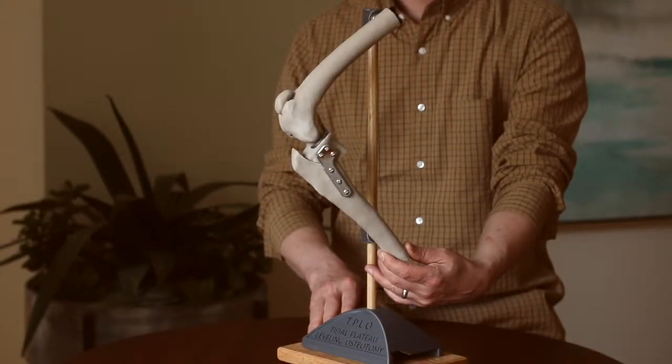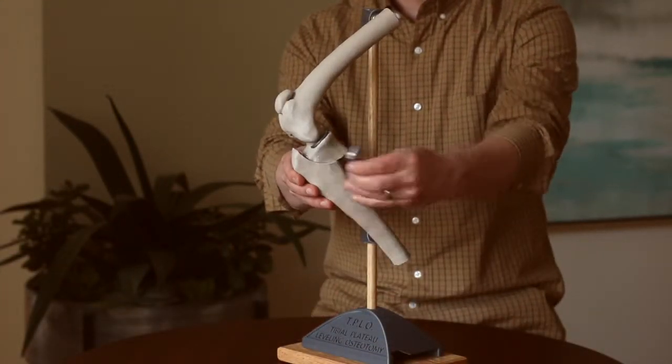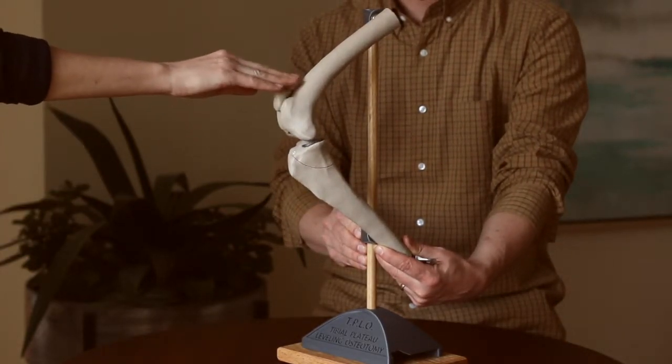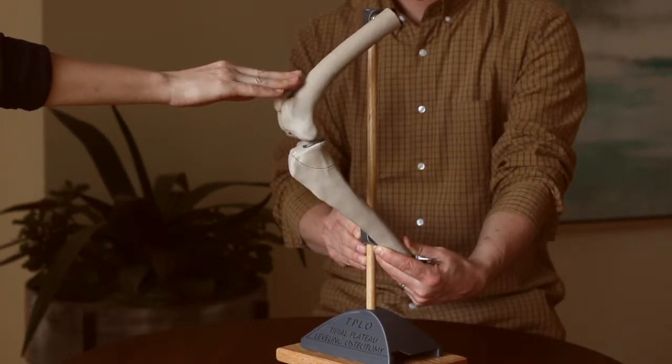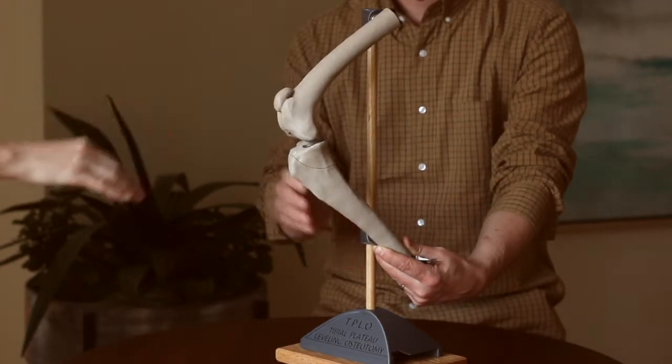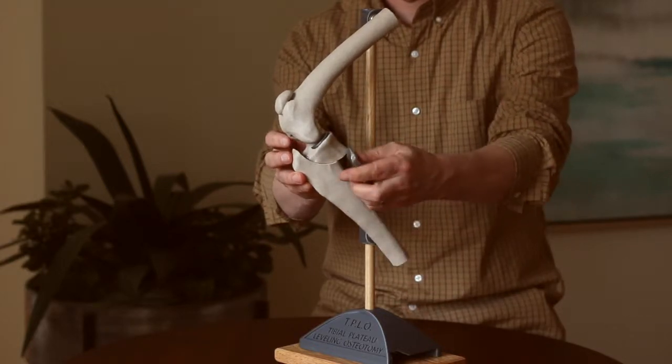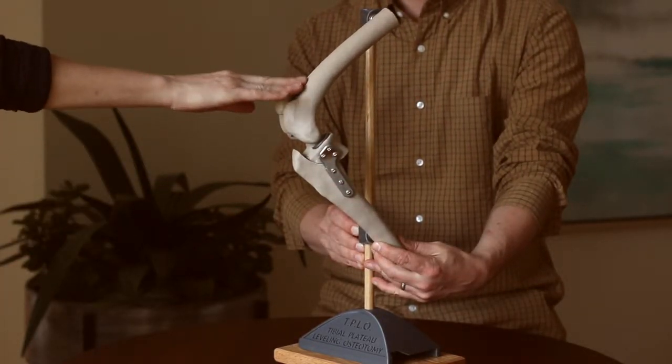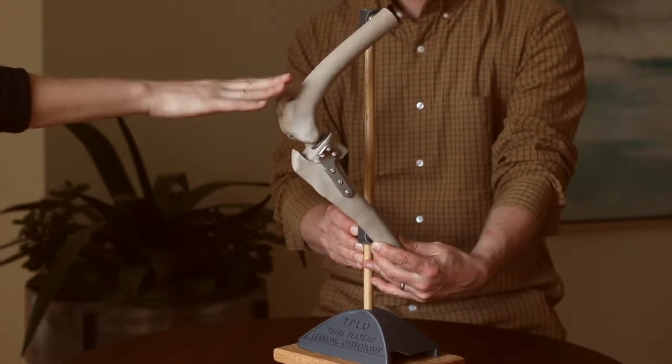So I can demonstrate those two different situations here. This is with the ligament torn but before surgery, and you can see every time the dog steps down you get this shifting. And then after surgery when the TPLO is complete, you can see that now in weight bearing the joint is stable and it's no longer shifting back and forth.